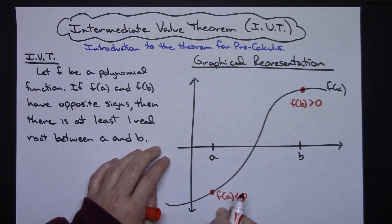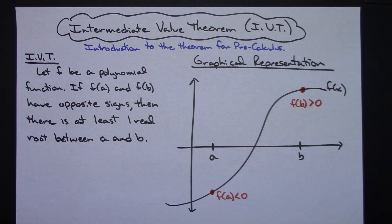And then for my F of B, I would go over to B, go up to the function, and it would be right there. This would be F of B, which obviously is greater than zero. So I definitely have an F of A and an F of B that have opposite signs.